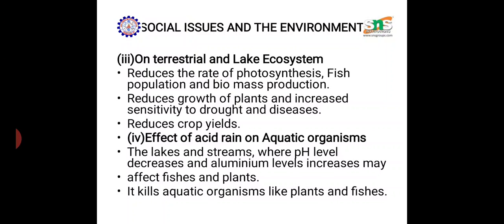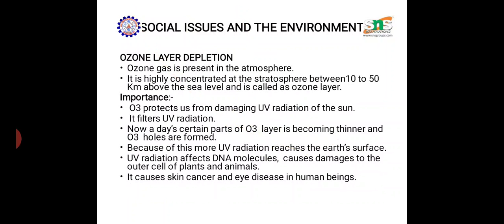Lake and terrestrial ecosystems are also affected. Soil becomes acidic, disturbing crop yield and causing drought and disease. The rate of photosynthesis decreases. Lake water becomes acidic, so fish and other aquatic animals cannot survive. The decreased pH level affects fish, plants, and all aquatic life.